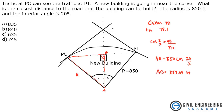So, what's the question asking for? What is the closest distance to the road? Your options here are pretty close. But if you went to 840, you would be into the zone where you couldn't see the PT, and that's not going to work. So the closest you're going to get is 835. The answer to this is A.